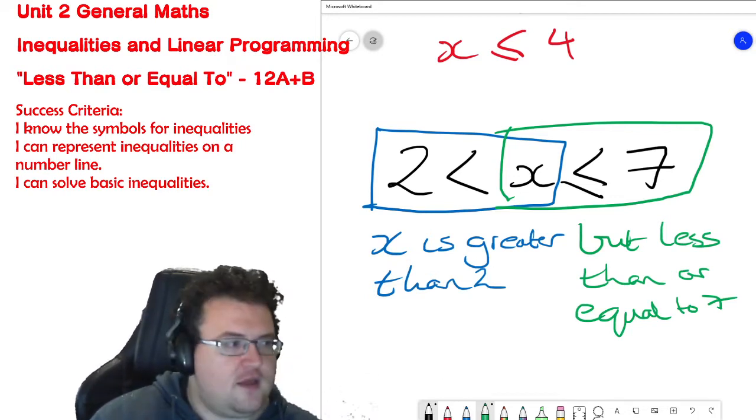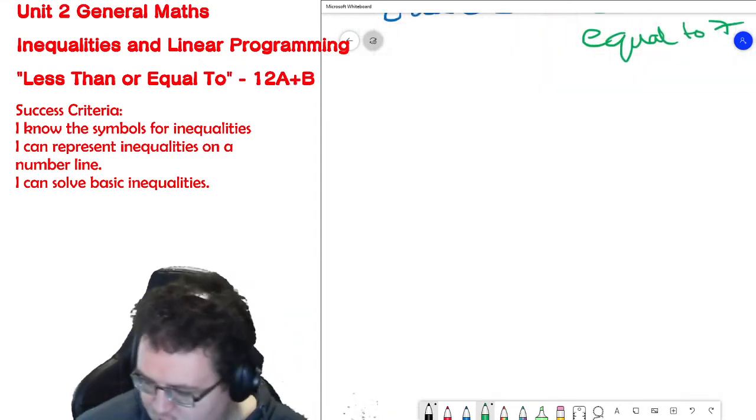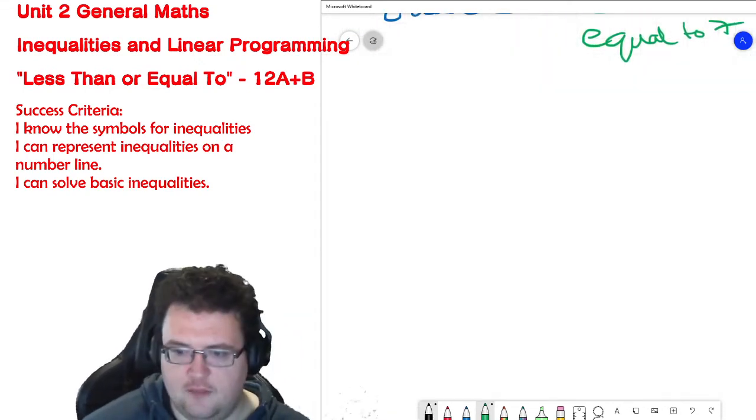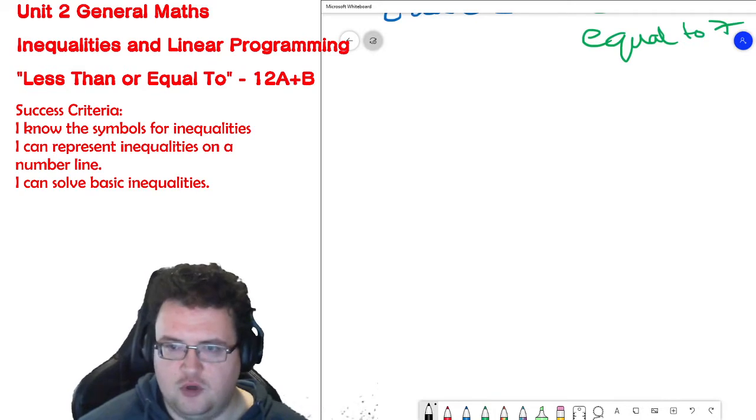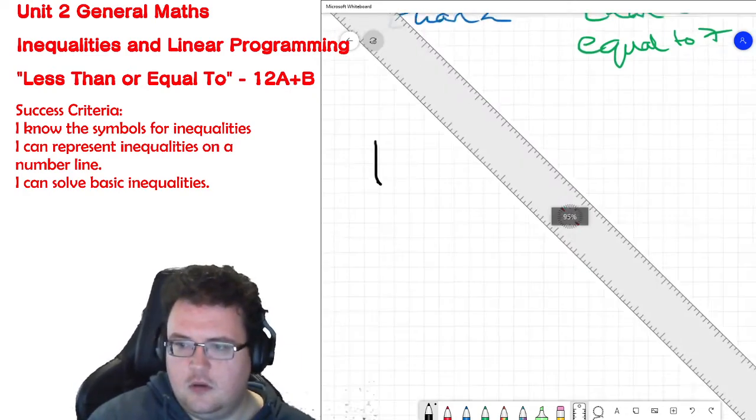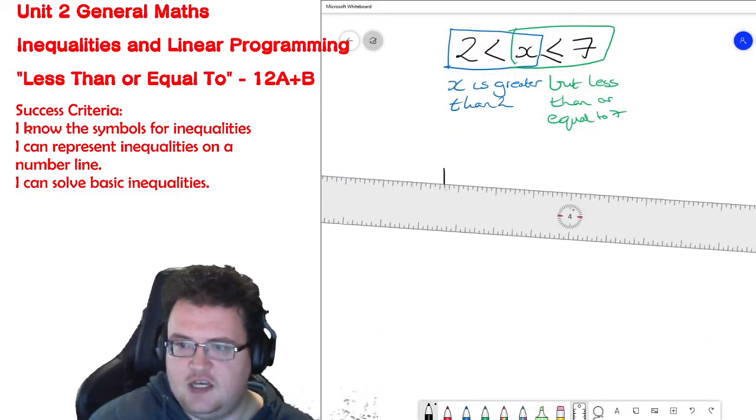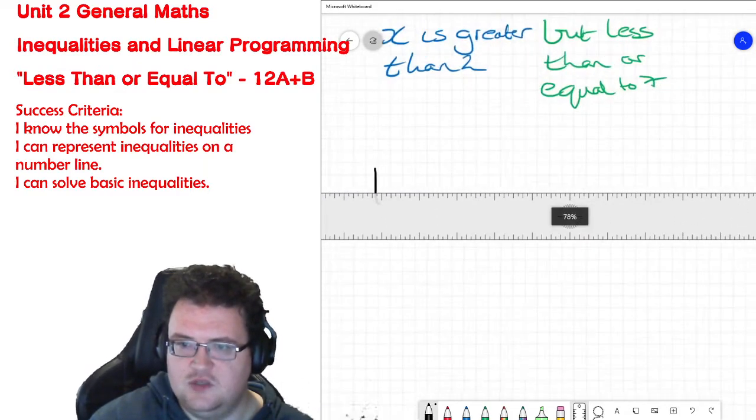So where this comes in visually though is when we have what are called number lines. I'm going to do a very poor job at trying to draw a number line using my on-screen ruler. I'm trying to draw a straight line, the darn thing zooms in and out.